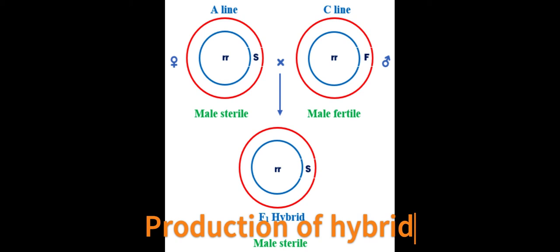Hybrid is produced by crossing the male sterile A line with a male fertile C line. The hybrid is always male sterile.